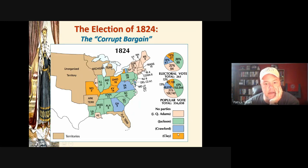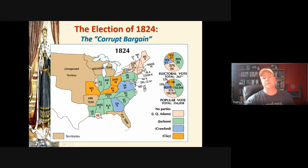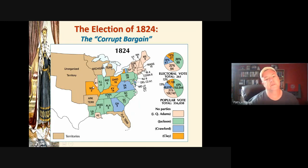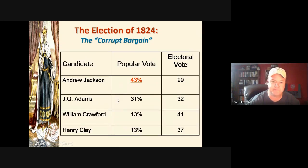So it came down to JQA and Jackson in the House vote. Clay was an influential leader, and the argument is that he traded the votes of his supporters in exchange for the role of Secretary of State. Clay was certainly qualified for that position — he and Adams didn't really get along — but we don't know for certain that a deal was made. Nonetheless, John Quincy Adams was elected president in the House.